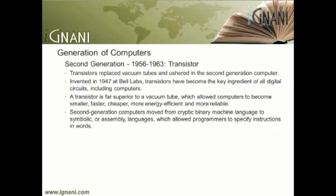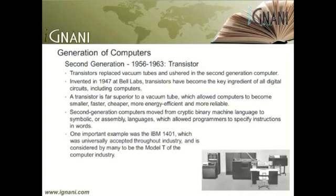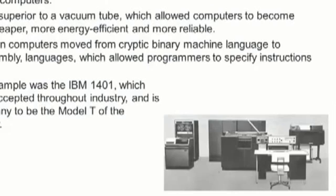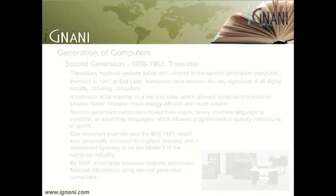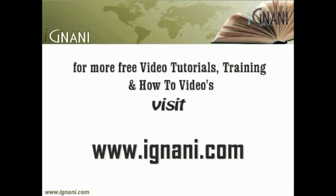During the early 1960s, there were a number of commercially successful second generation computers used in businesses, universities, and government, from companies such as Burroughs, Control Data, Honeywell, IBM, Sperry Rand, and others. One important example was the IBM 1401, which was universally accepted throughout industry and is considered by many to be the Model T of the computer industry. The picture here shows the IBM 1401. By 1965, most large businesses routinely processed financial information using second generation computers. In the next video of Computer Fundamentals Part 1, I will continue with the third generation of computers.